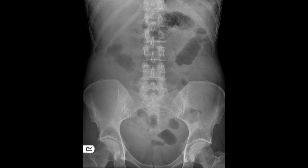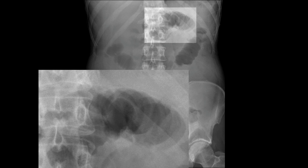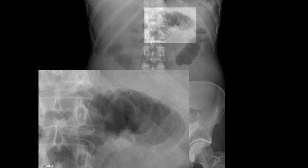Small bowel tends to be central, while large bowel is around the outside, the periphery of the abdomen. There are also a couple of non-specific sigmoid colon loops in the pelvis. Zooming in, you can see how the continuous rings of valvulae conniventes go all the way across the bowel. The same patient also had a CT scan, so we'll see corresponding levels.